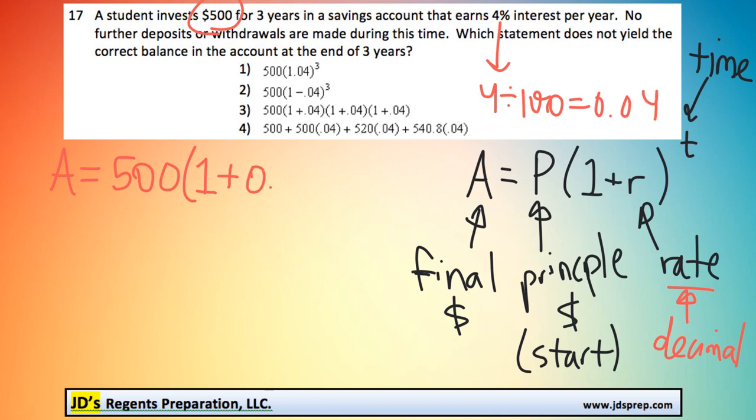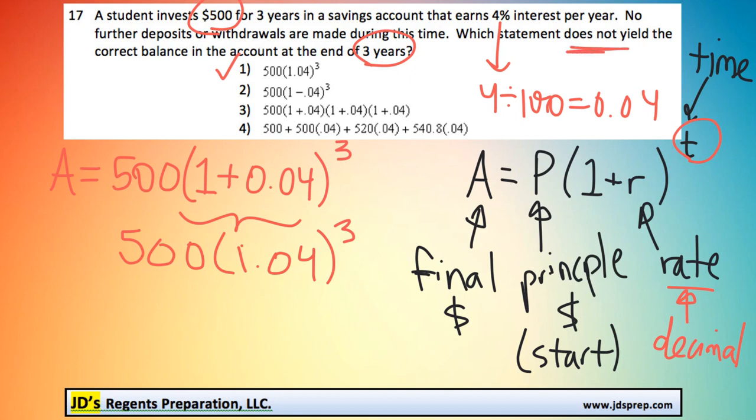So it's actually going to be 1 plus 0.04, and our time in this case is 3 years, so it's to the power of 3. If we simplify this, we would get 500 times 1.04 to the power of 3. We can see that is answer number 1, so that one's definitely correct. We're looking for the answer that is wrong.